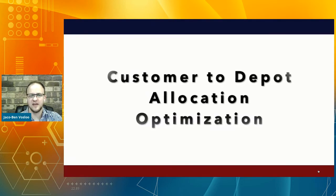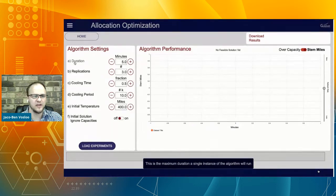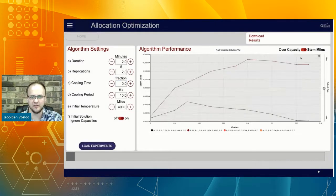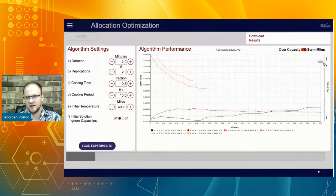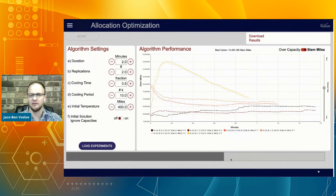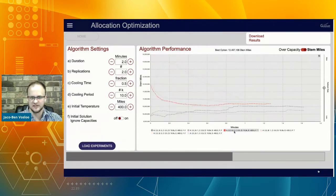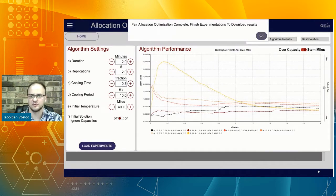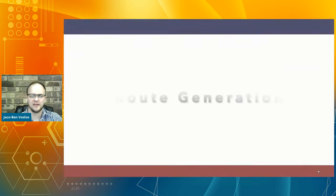Once the data was set up, we allocated customers to depots. In the video, you can see the ability to configure different experiments for the simulated annealing algorithm. The algorithm runs through multi-threading, and you can monitor the optimized stem miles for each scenario in real time. You can see the algorithm starting off and, consistent with simulated annealing behavior, initially allowing worse results before significantly improving. The output also shows whether capacity concerns at the depots have been addressed, and results can be downloaded for further analysis.